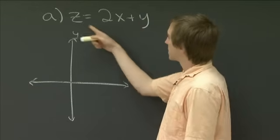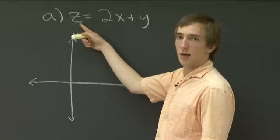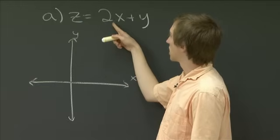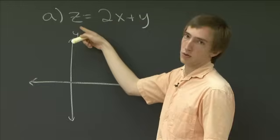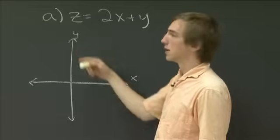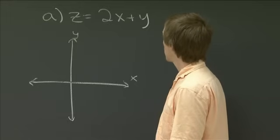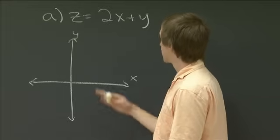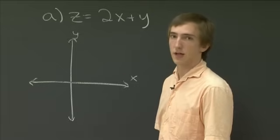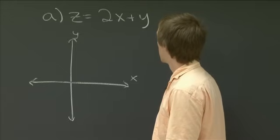So one thing we notice about this is that if we choose z to be a constant, then the equations that we're going to get is 2x plus y equals some constant, right? So these are just going to be lines. The level curves, in this case, are just going to be lines. So for instance,